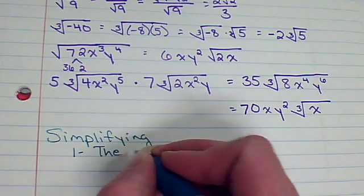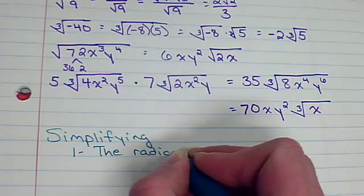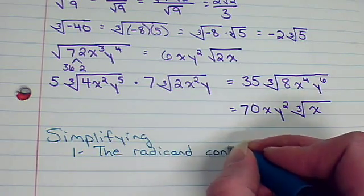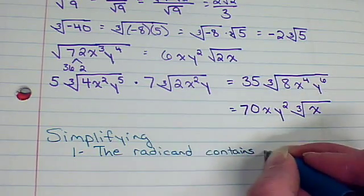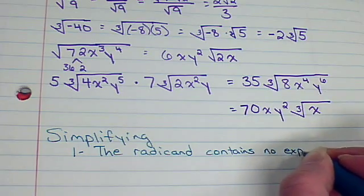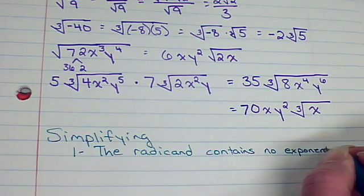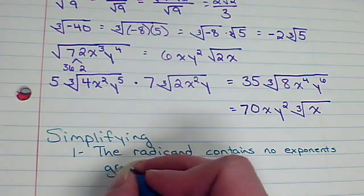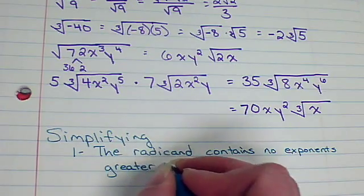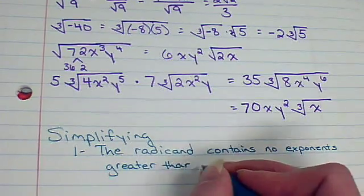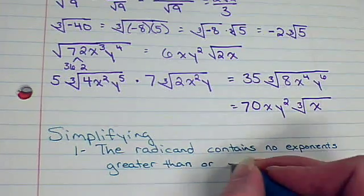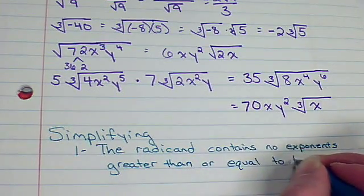Rules for simplifying. Number 1. The radicand, that's the part underneath the radical sign, contains no exponents or no powers greater than or equal to the index.